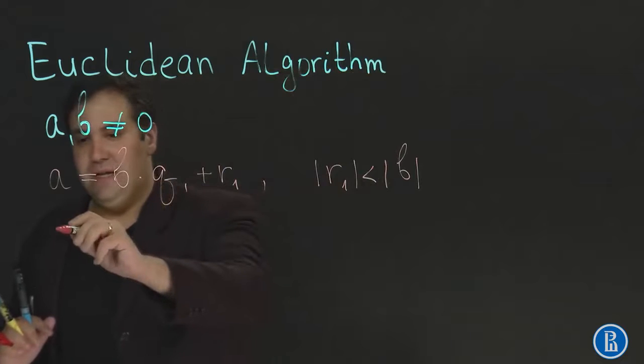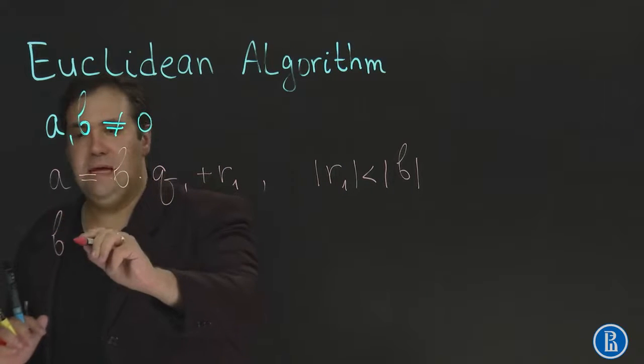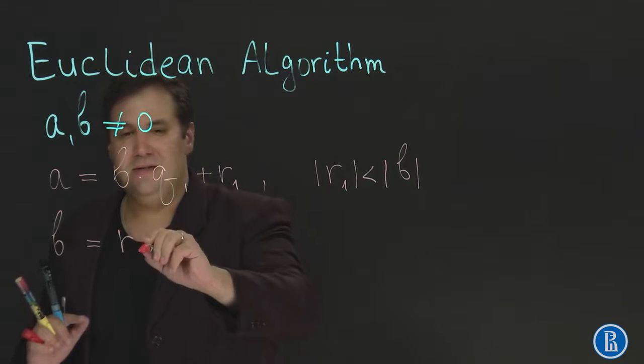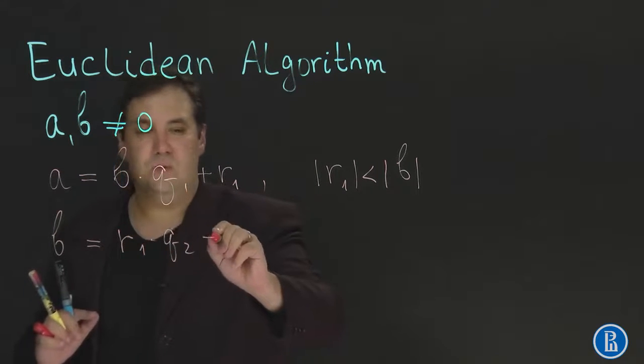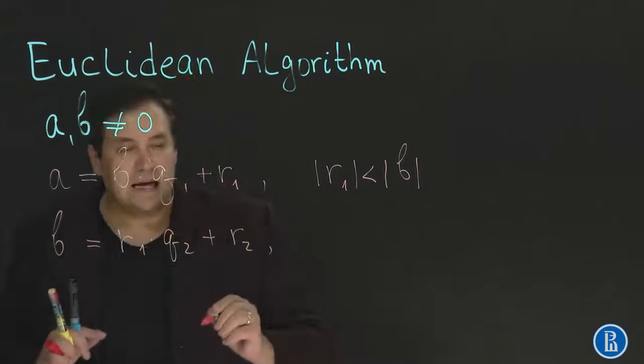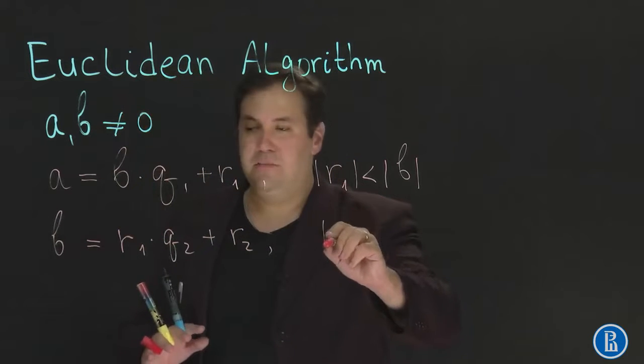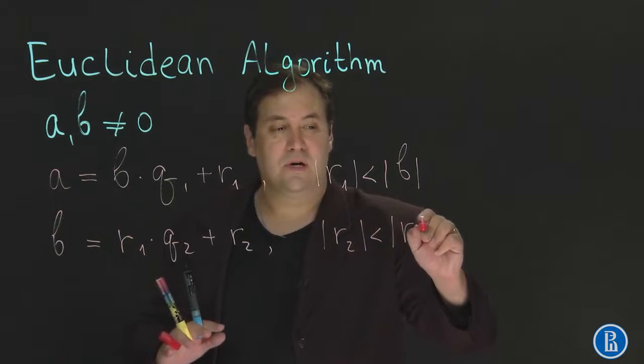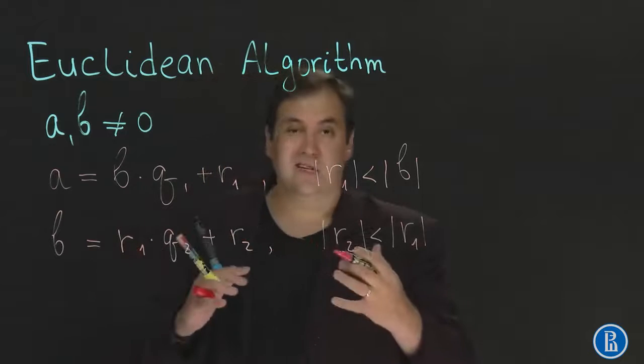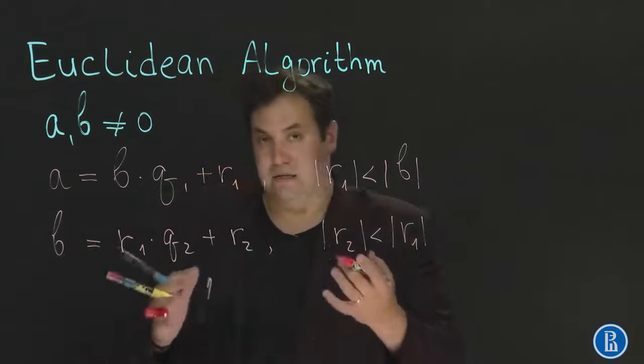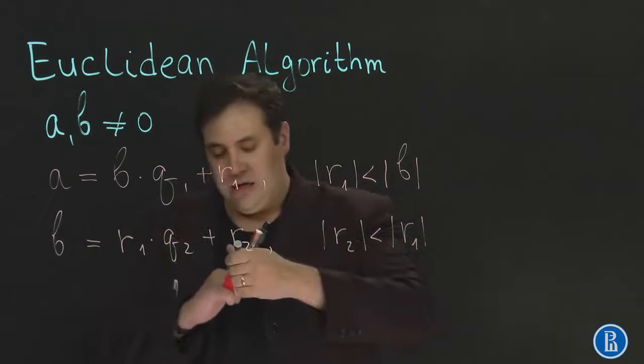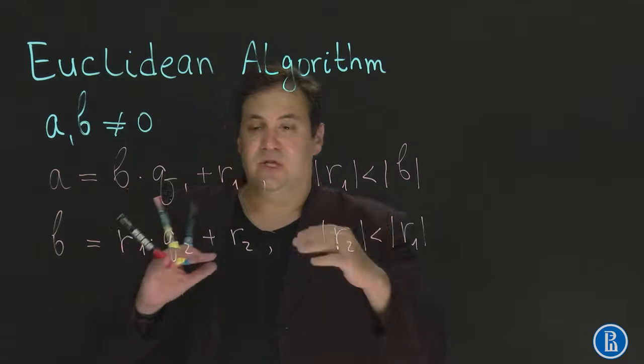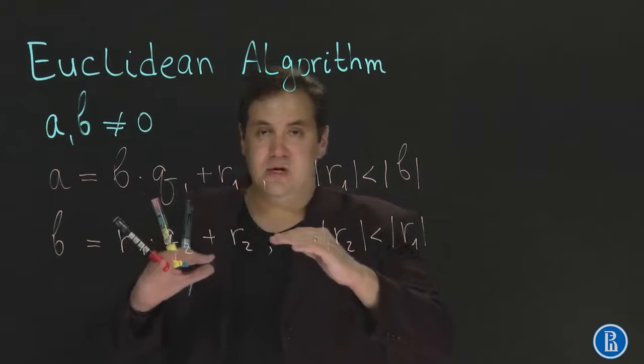And now the next step of the Euclidean algorithm we take B divided by R1, of course with a remainder R2. And the norm of this remainder must be less than the norm of R1. Of course this remainder could occur to be 0, and in that case it has no norm. But when a remainder is equal to 0 the Euclidean algorithm stops. So as soon as we get 0 in this place the algorithm will stop.